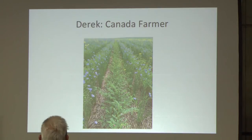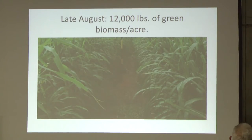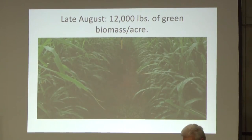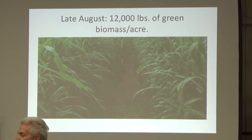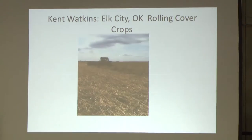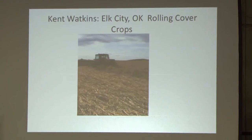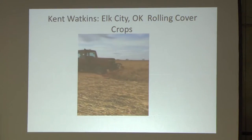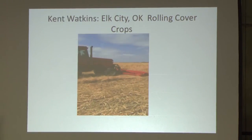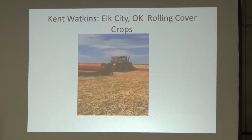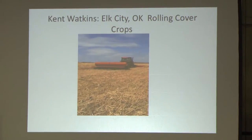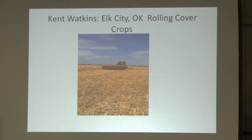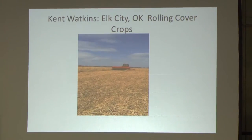Now let's go to Elk City, Oklahoma. Kent Watkins grew 12,000 pounds of biomass in an area that only gets 16 to 18 inches of rain. He is a chemical fertilizer dealer who told me he wanted to get away from chemical fertilizer. I designed a mix for him. The neighbors asked, 'What are you going to do with all that hay?' He said, 'I'm going to roll it and plant my sesame right into it,' and his sesame came out beautiful.